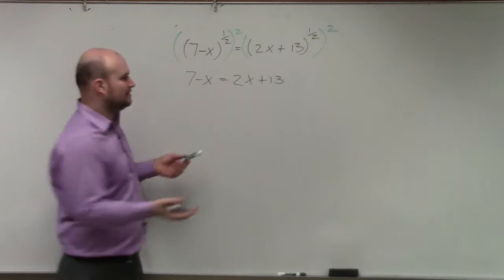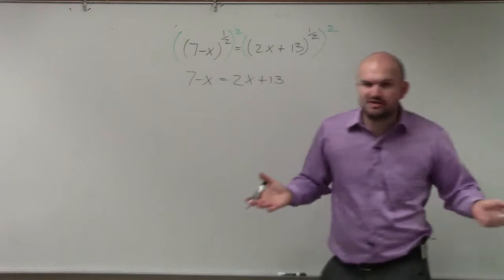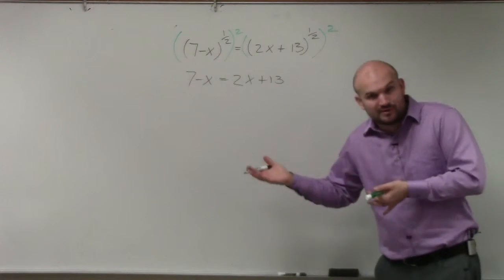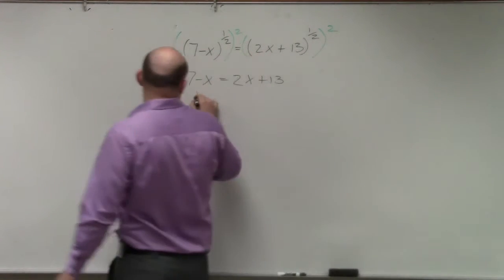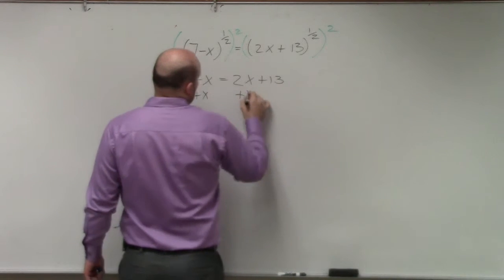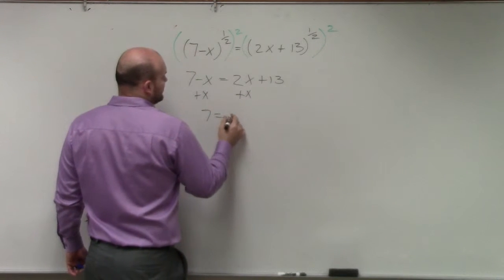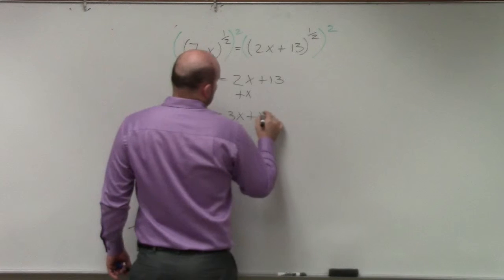Well, now I can just go ahead and solve. Now this is just a linear equation, right? I have variable on the left side, variable on the right side. Get the variables on the same side. So I'll add an x, add an x. 7 equals 3x plus 13.